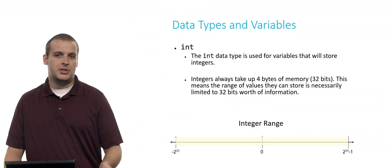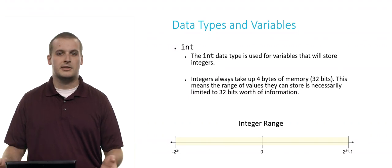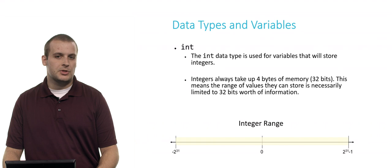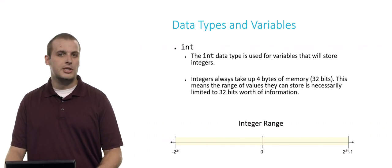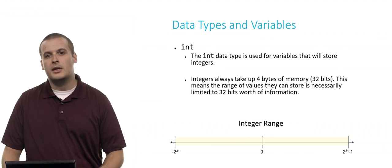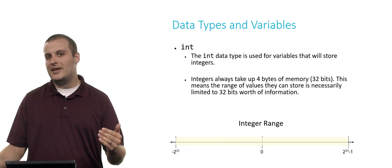So C comes with some built-in data types. The first is int. The int data type is used for variables that will store integer values, 1, 2, 3, negative 1, 2, 3, and so on. Integers always take up four bytes of memory, which is 32 bits. There are eight bits in a byte.